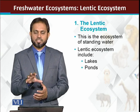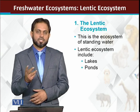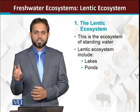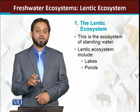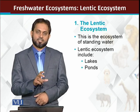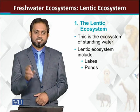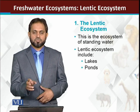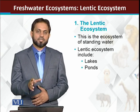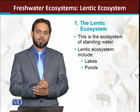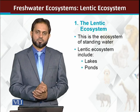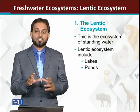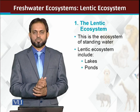If we look at the freshwater ecosystem, there are two types of ecosystems. Lotic ecosystems are the flowing water ecosystems, with rivers, streams, brooks, and nadine making the lotic ecosystems, while the lentic ecosystem is the standing water ecosystem.